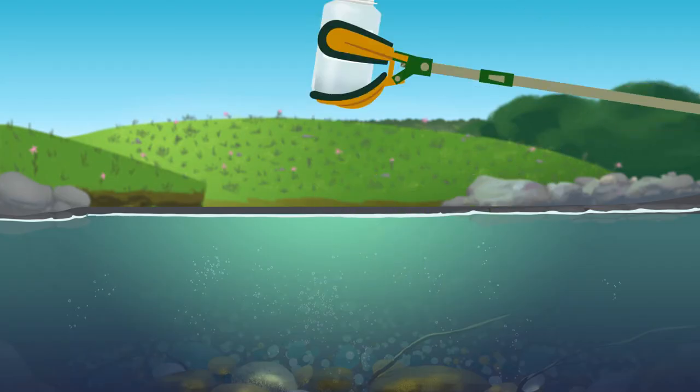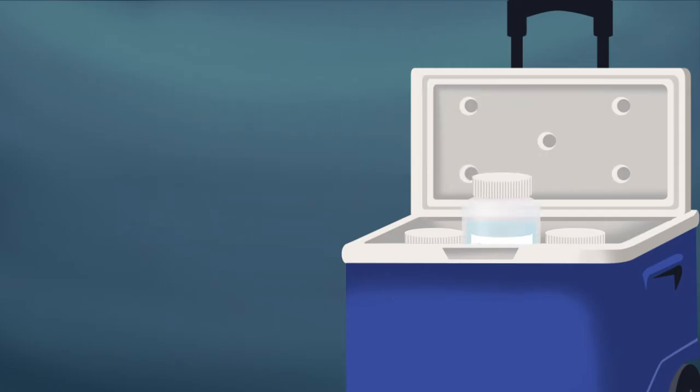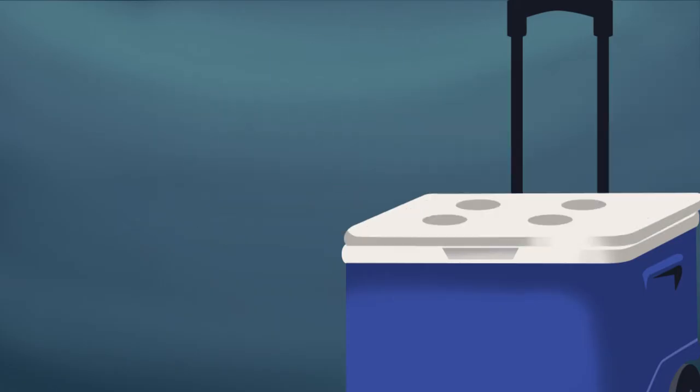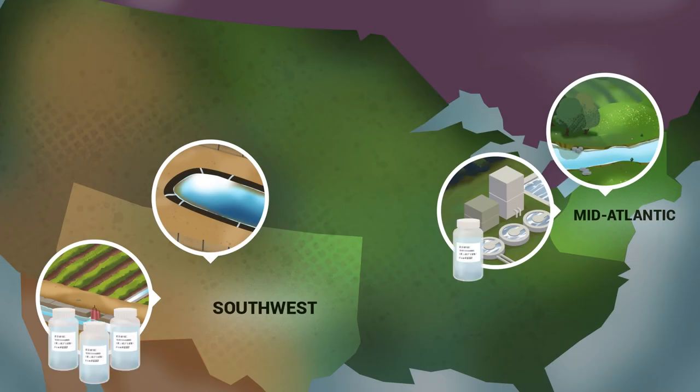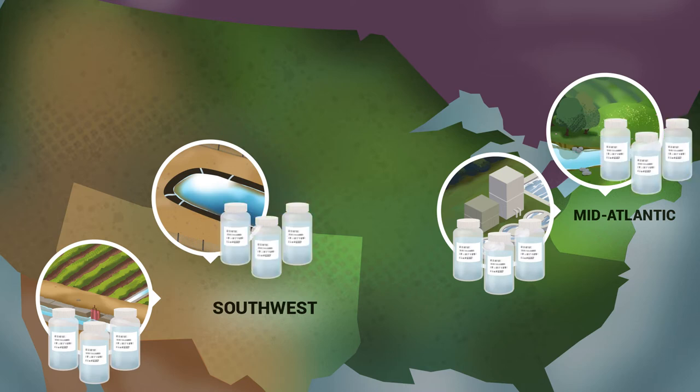Scientists around the country use the same procedures to collect and analyze water wherever it is collected. They take multiple samples from each site and use multiple measurements for accuracy. That's one way we know the results can be trusted. In this lab, we'll follow the same techniques scientists use to ensure proper sampling and testing of water.